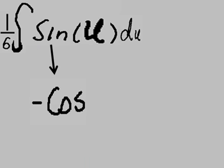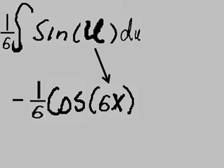So, let's take the integral of sine, and we get negative cosine. Bring down the constant 1 over 6, reformat it to negative 1 over 6 times cosine. Bring down the u and substitute with 6x. Bring down the du as a positive c.